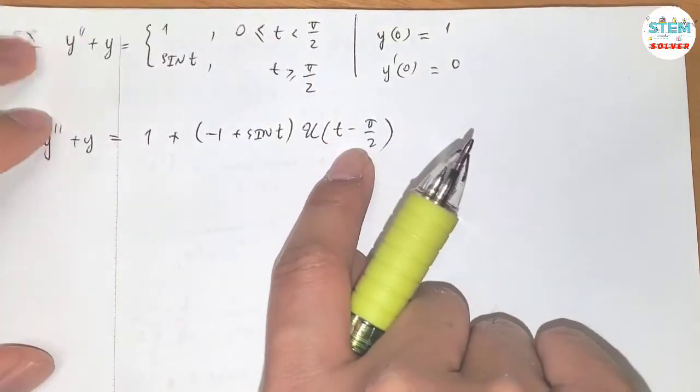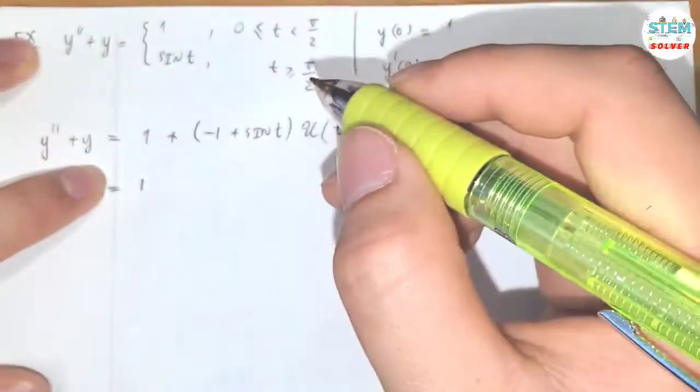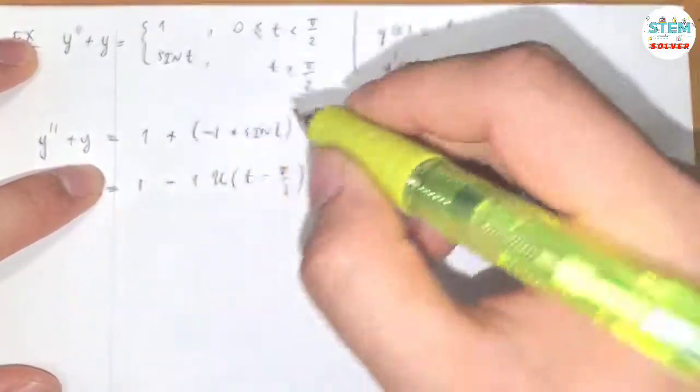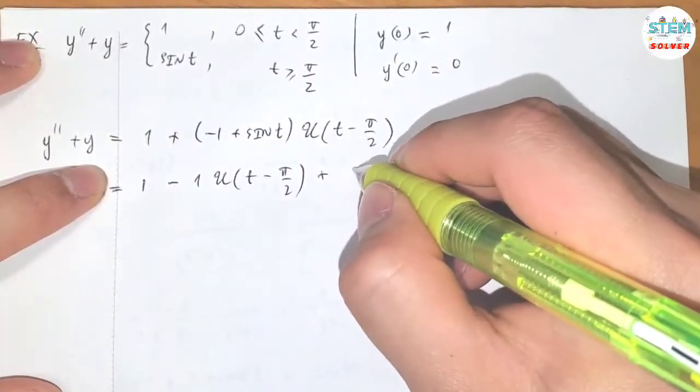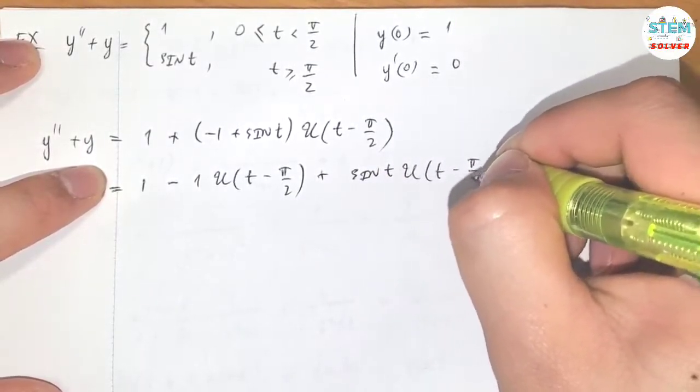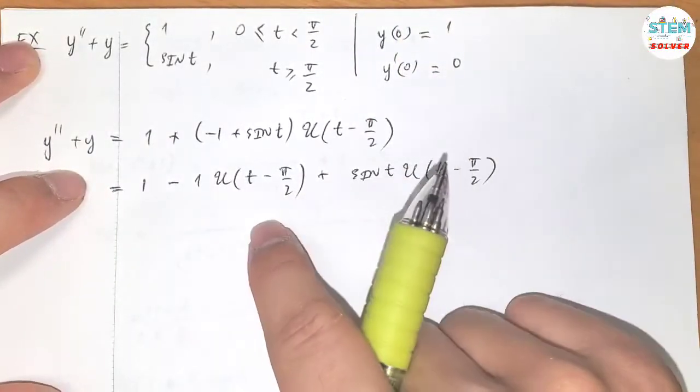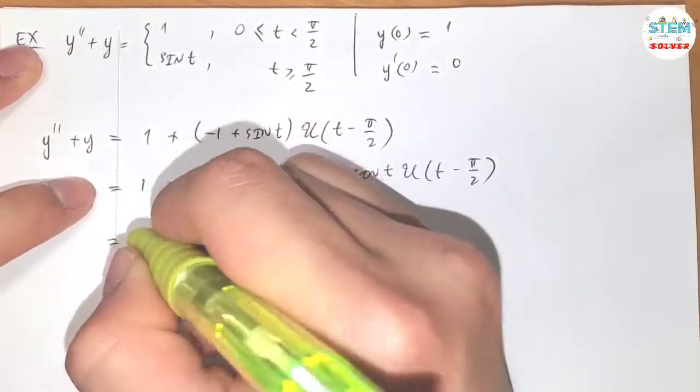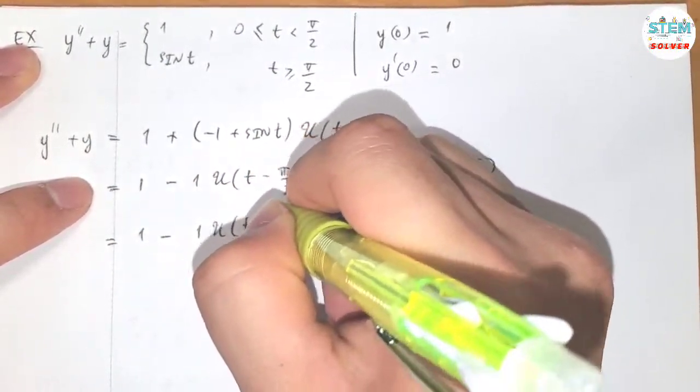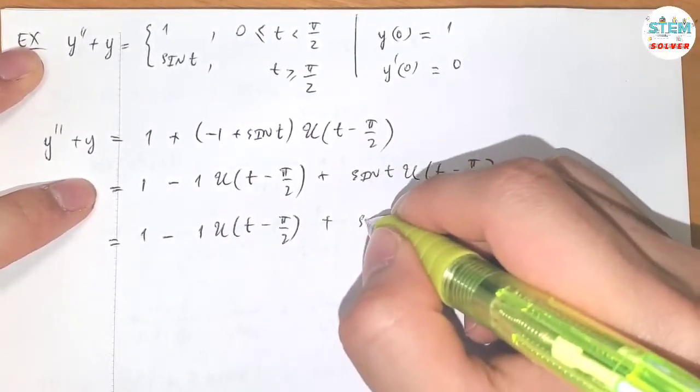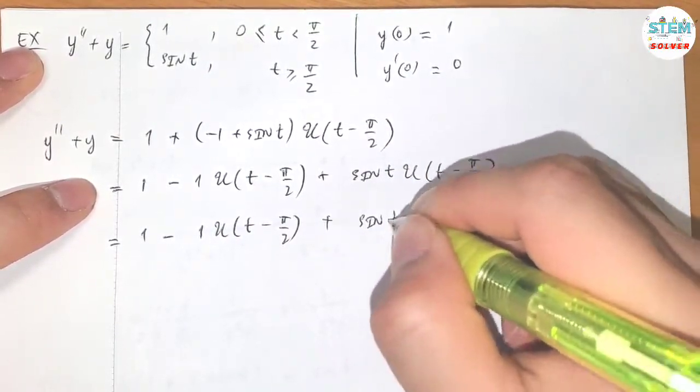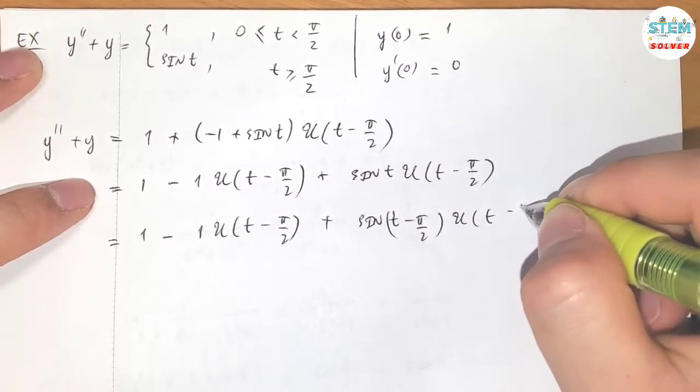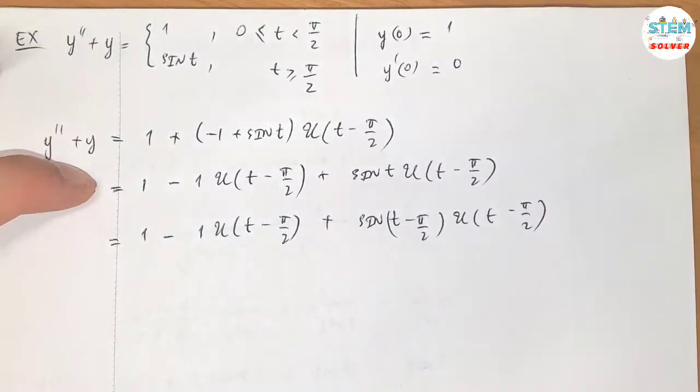Now let me multiply and distribute this out. So I have 1 minus 1 times u of t minus pi over 2 plus sine t u of t minus pi over 2, right? So you're okay with this one, but for this one we need to get a t to match up in order to find the Laplace transform.